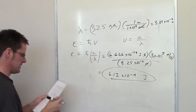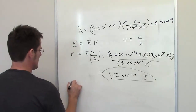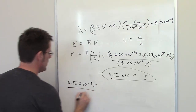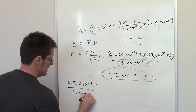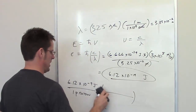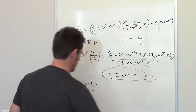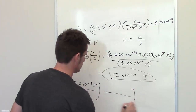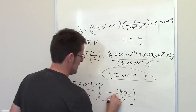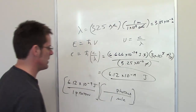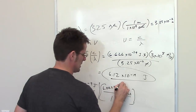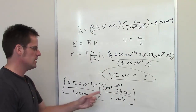In Part B, it asks what is the energy of a mole of these photons. We have 6.12 times 10 to the negative 19th joules in one photon, and we need to find how many joules are in an entire mole of photons. In one mole of photons, how many individual photons do we have? That's Avogadro's number — 6.022 times 10 to the 23rd. So one mole of photons contains that many individual photons.